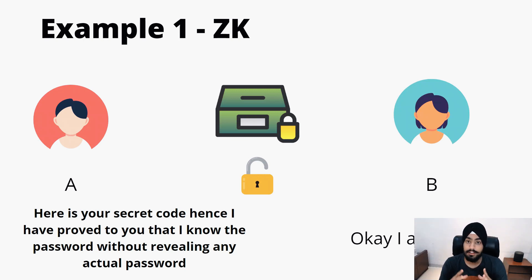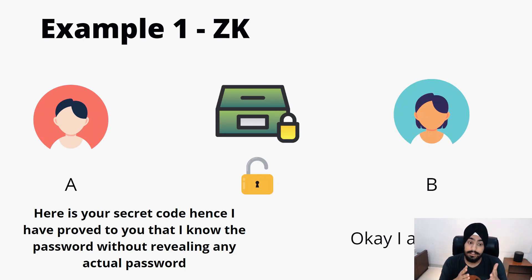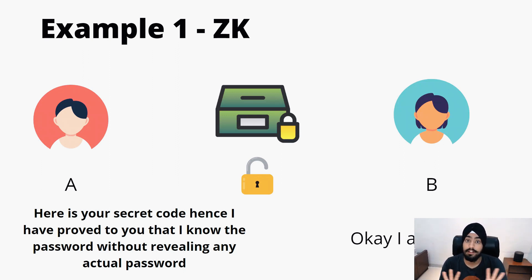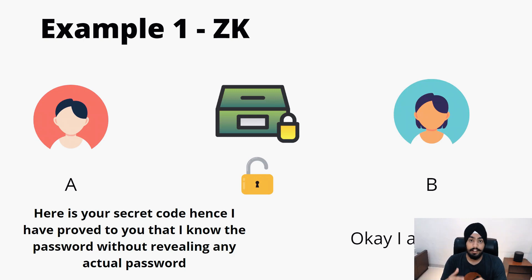So this is what zero knowledge is in simple terms. Person A, who is the prover, proved to person B that he knows the password without even revealing the actual password. That is zero knowledge.